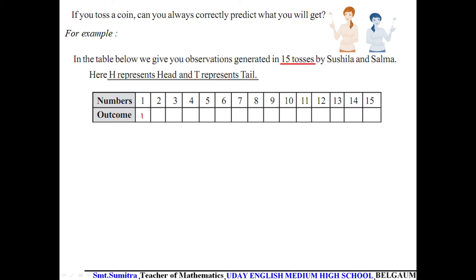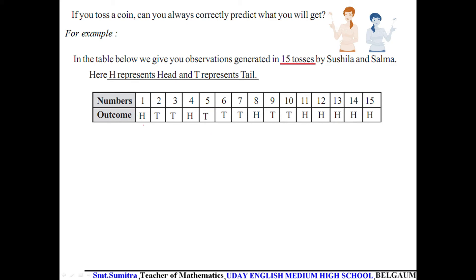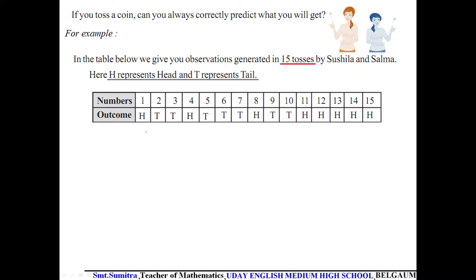The first outcome is head, the second toss is tail, the third is tail, the fourth is head, the fifth is tail — and so on. We cannot predict whether it will be head or tail. After recording all 15 outcomes, we see no proper pattern in the results.